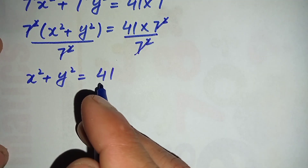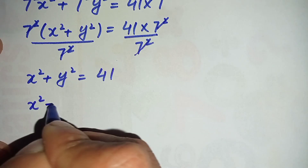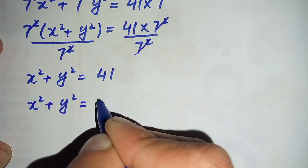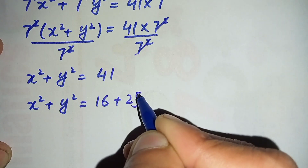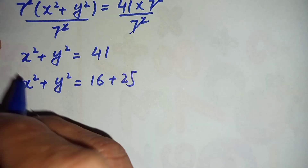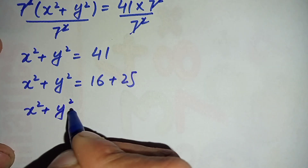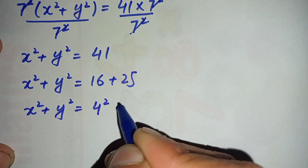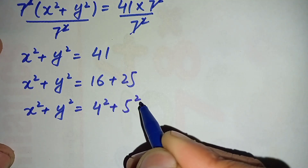In the next step, we can write 41 as the sum of 16 and 25, since 16 plus 25 equals 41. Then in the next step, we change these two numbers to their exponential form: x squared plus y squared is equal to 4 squared plus 5 squared.